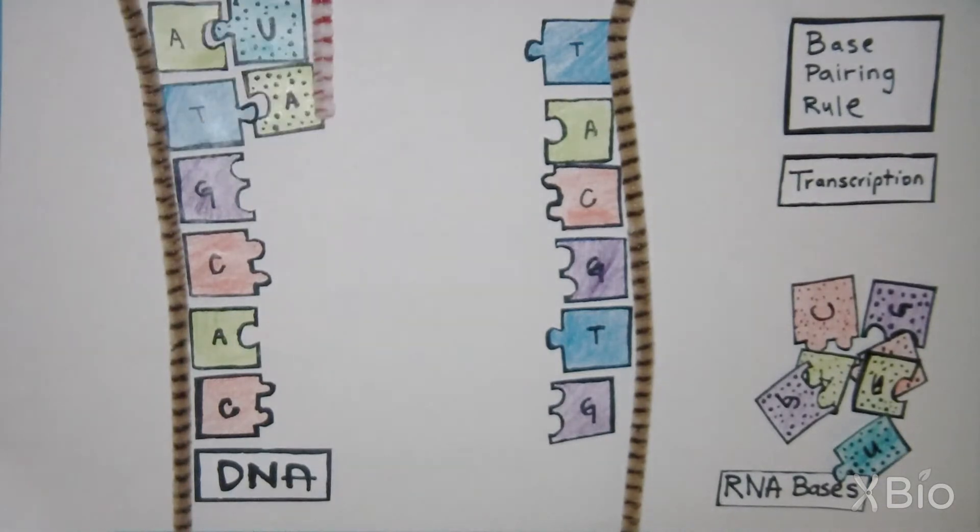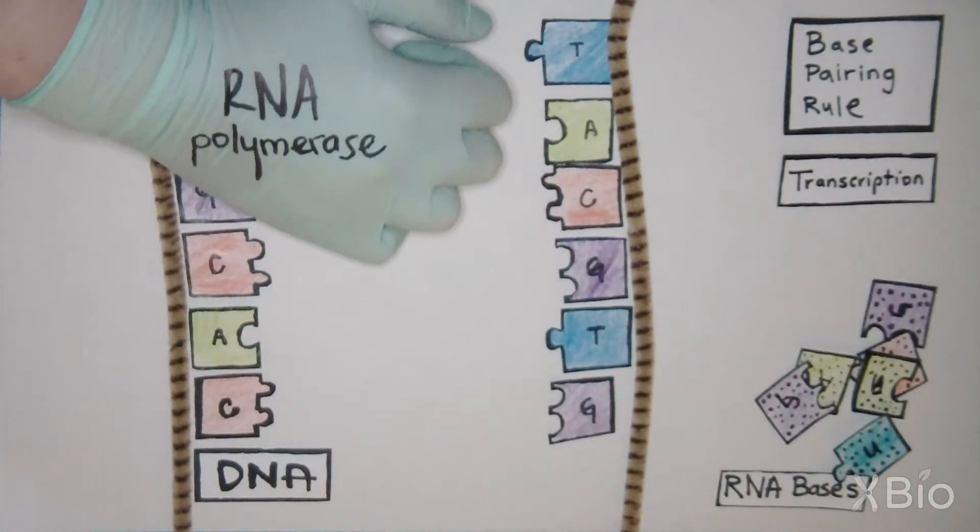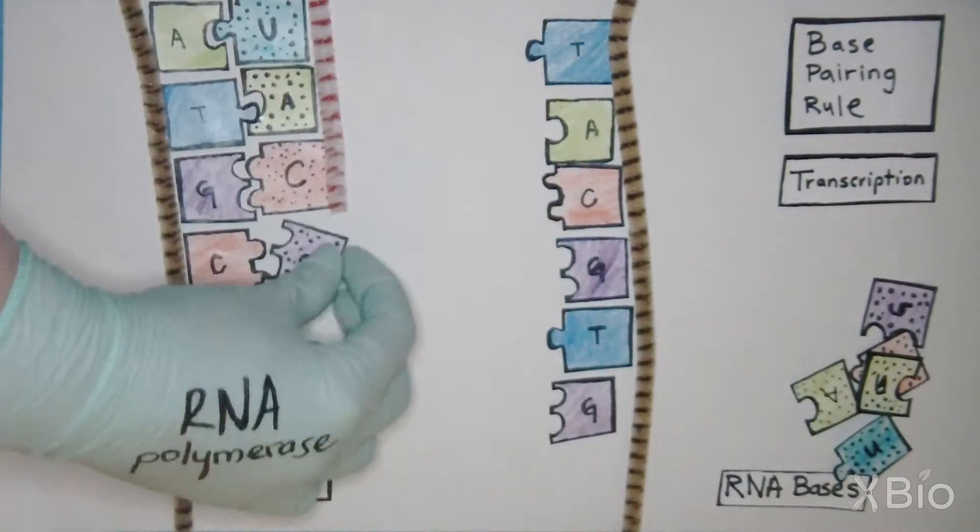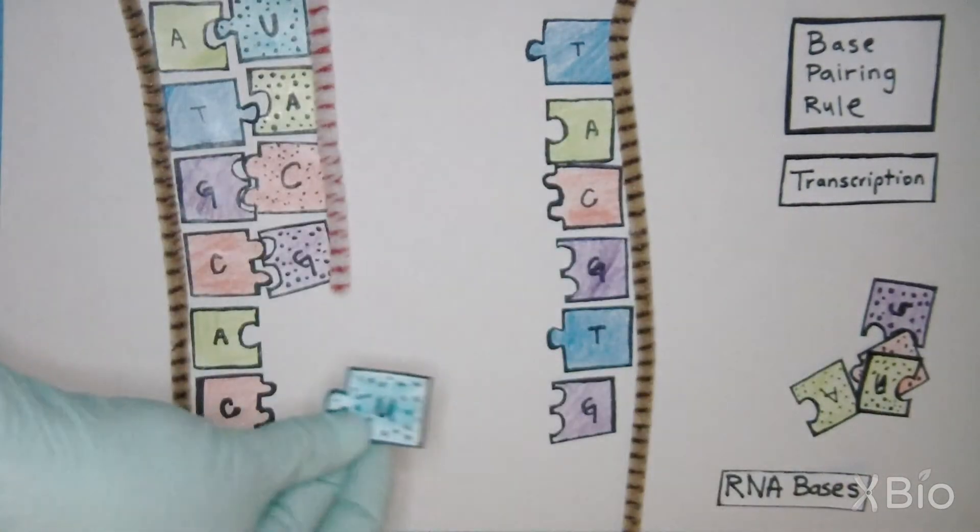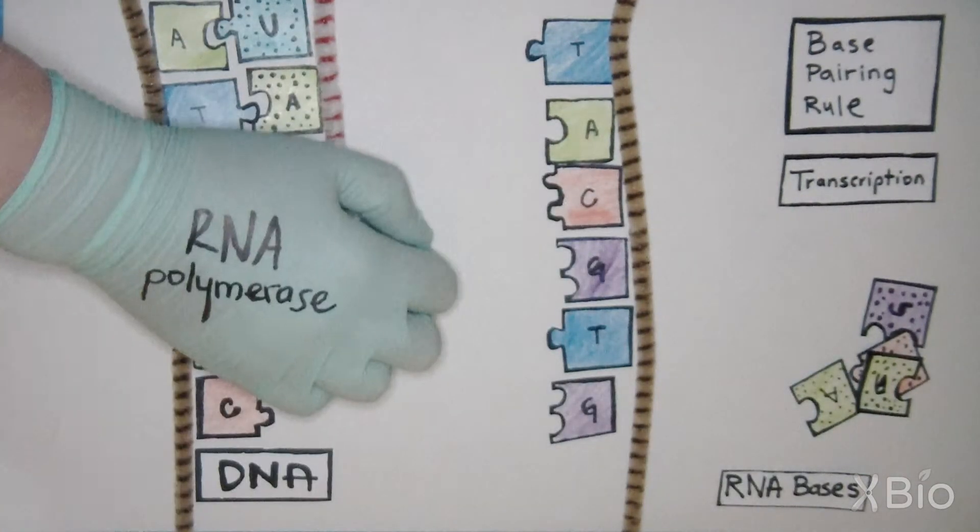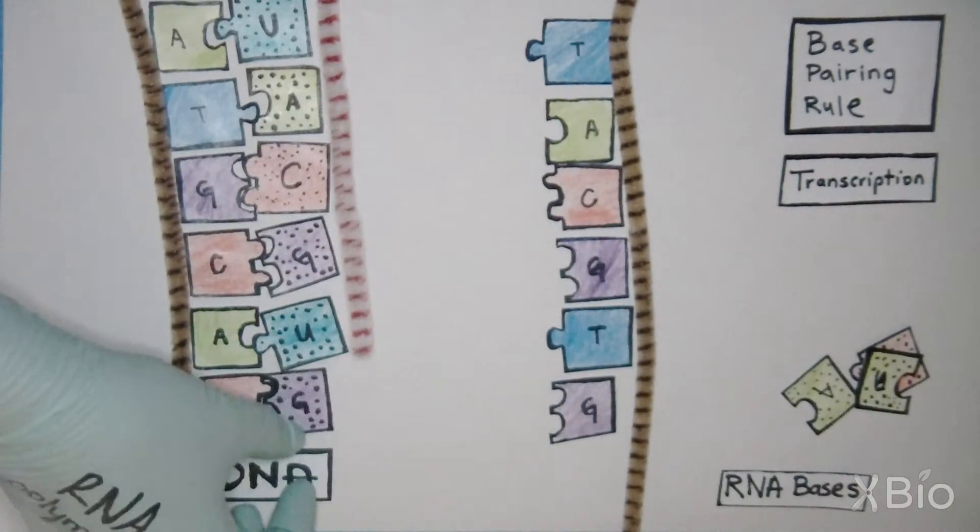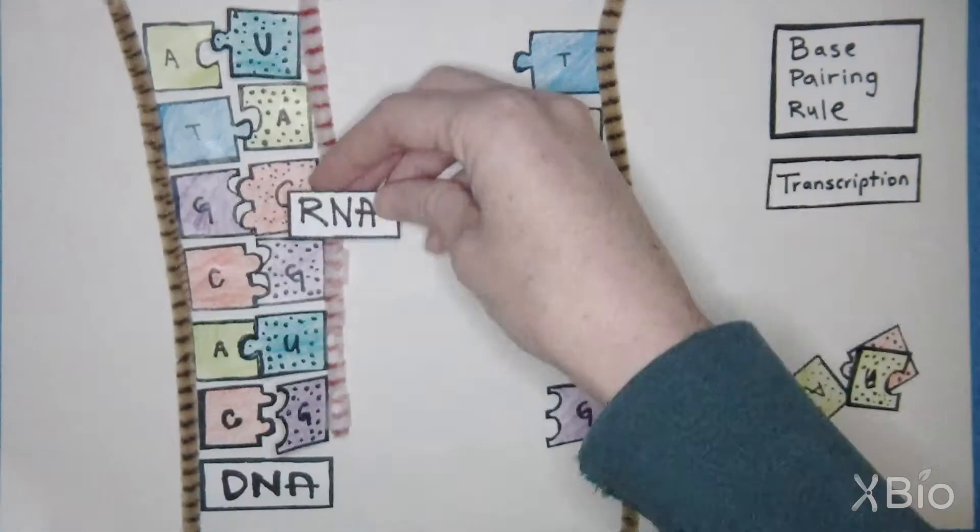RNA and DNA are very similar, but RNA uses the base U instead of the base T. Just like T, U pairs with A, so the cell still follows the base pairing rule to make an RNA copy of a DNA gene.